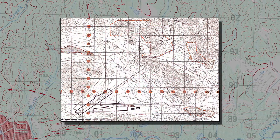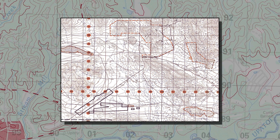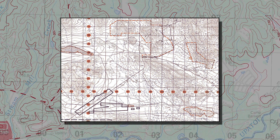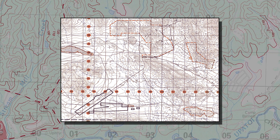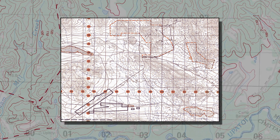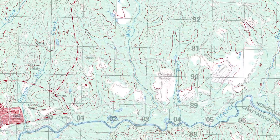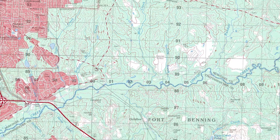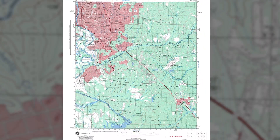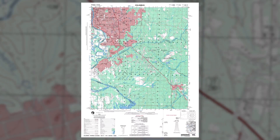On older editions and red light readable maps, brown identifies all relief features and elevation such as contours. Other colors may be used to show special information, and these are indicated in the marginal information as a rule.